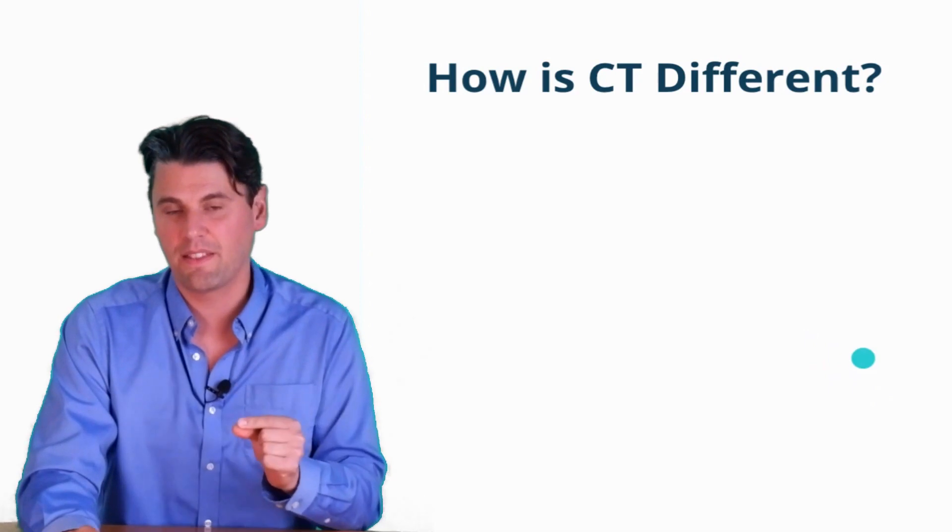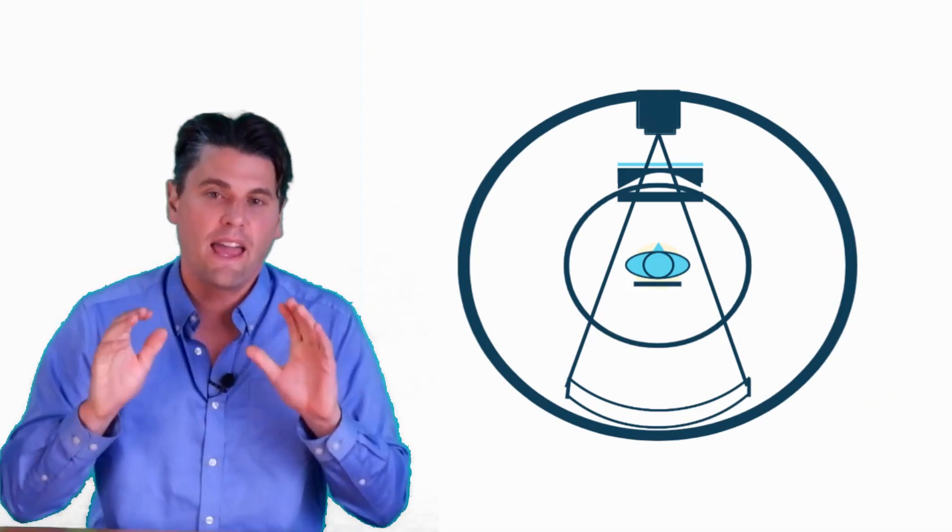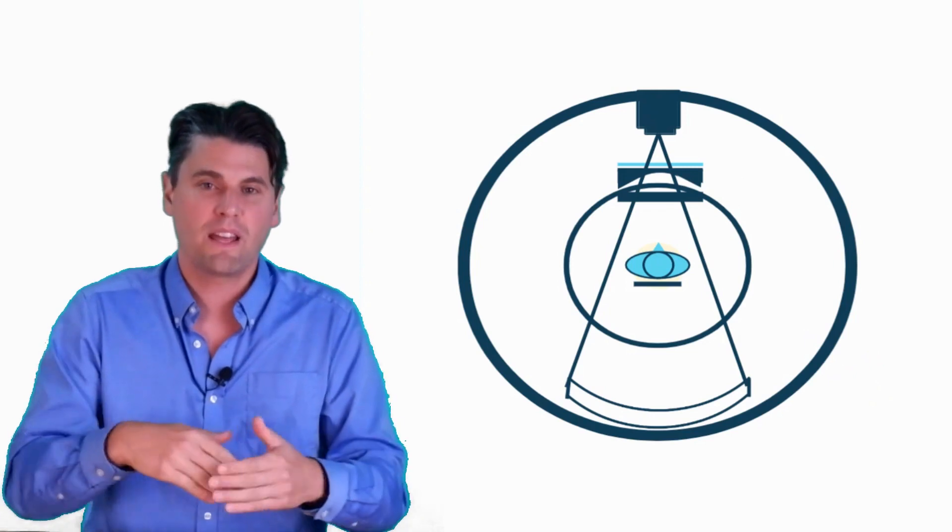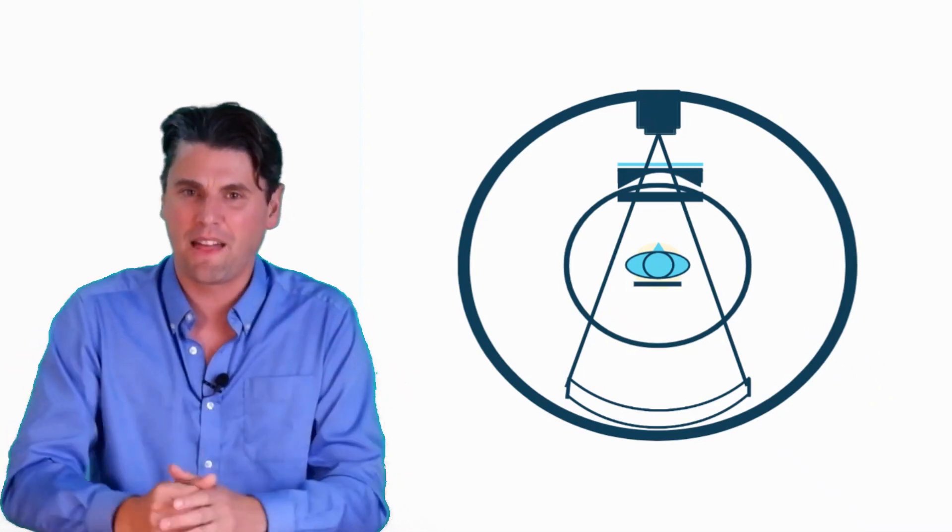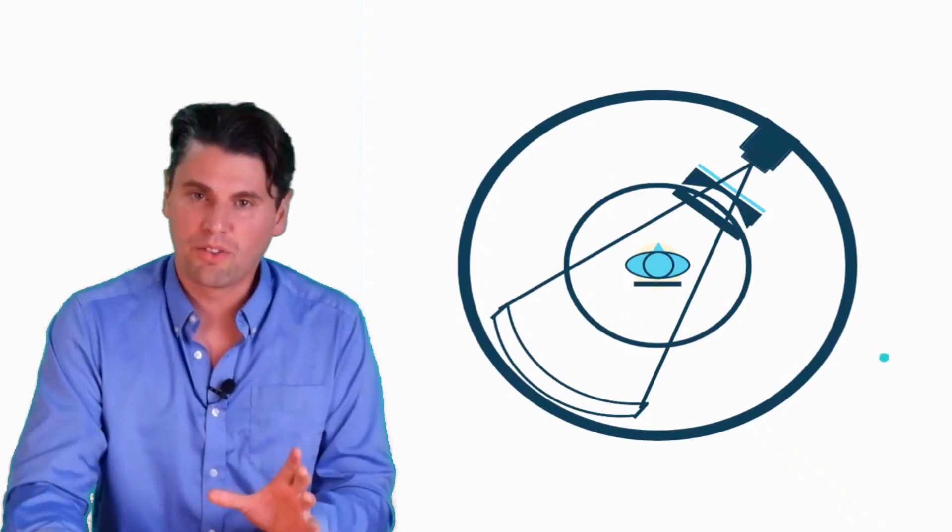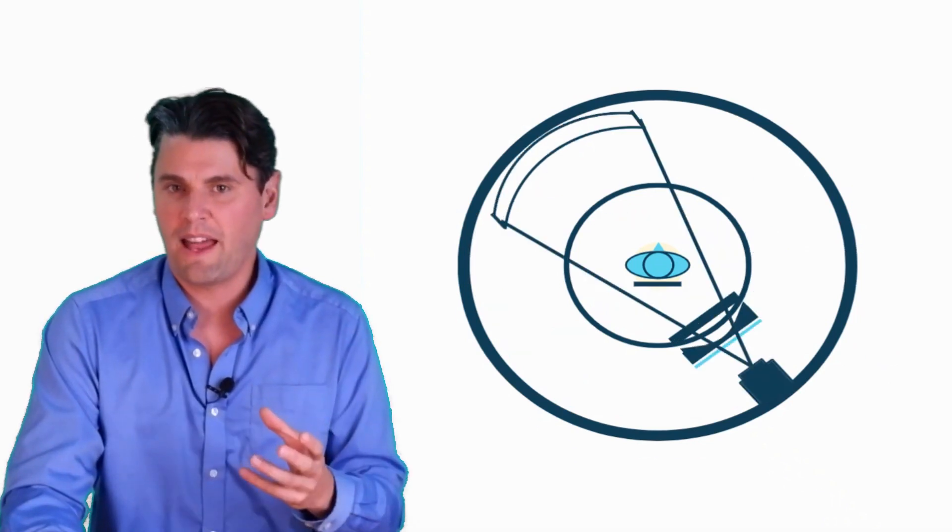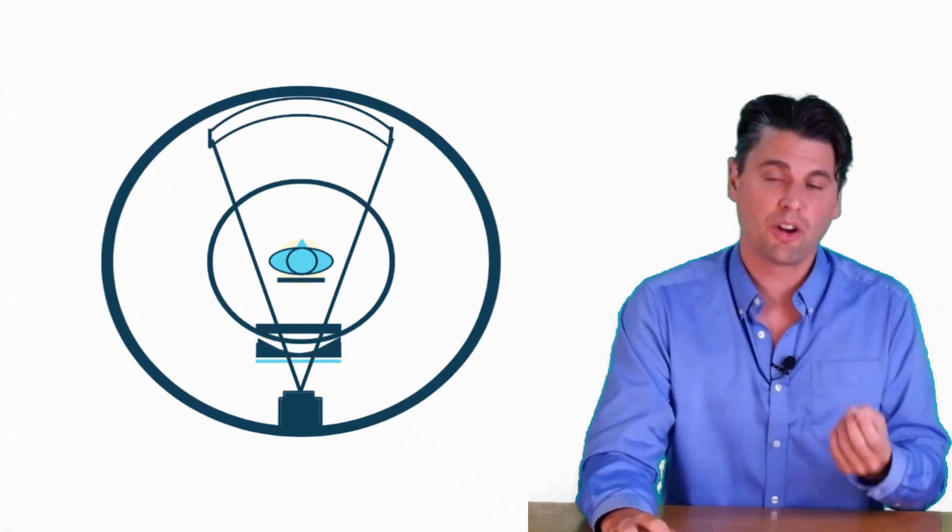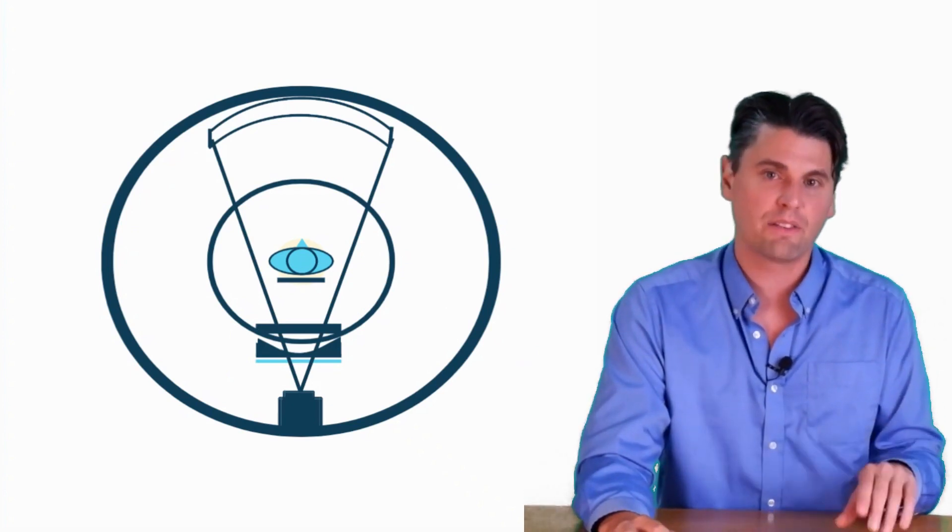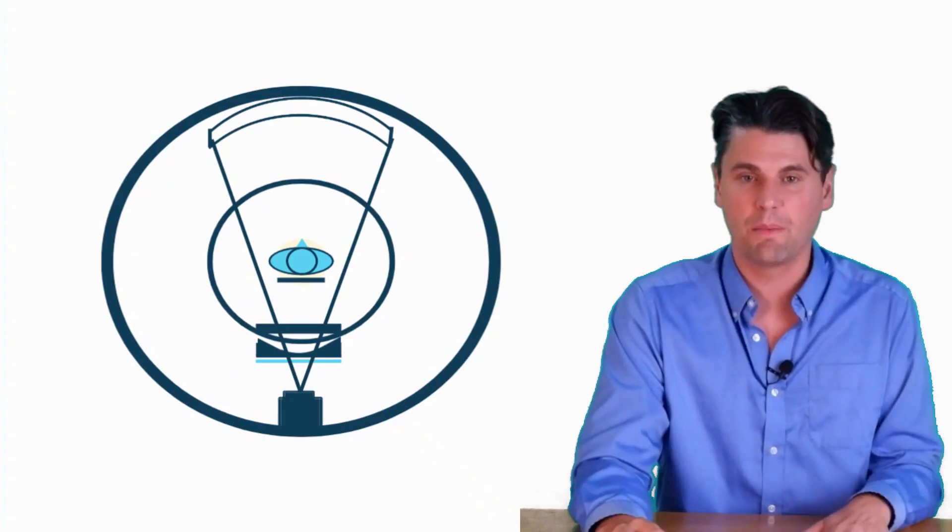And then how is CT different than this? CT, we're actually doing reconstruction. So instead of taking just one picture like we are in x-ray, we're taking many pictures, like around 1,000 pictures at least usually to generate an image. So our source and our detector are rotating around the patient. So if there's motion during that acquisition, it's actually going to show up during that reconstruction process. And it's going to be a little bit different than x-ray because x-ray doesn't actually need a reconstruction process. It just reports the image.